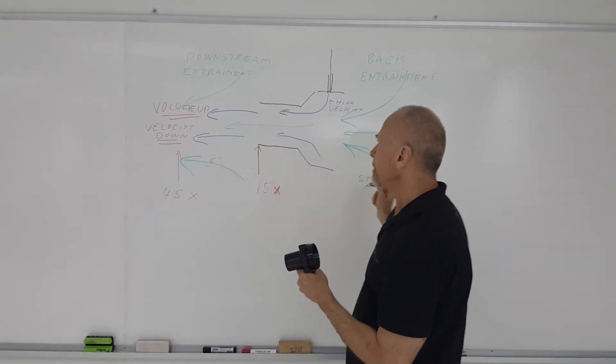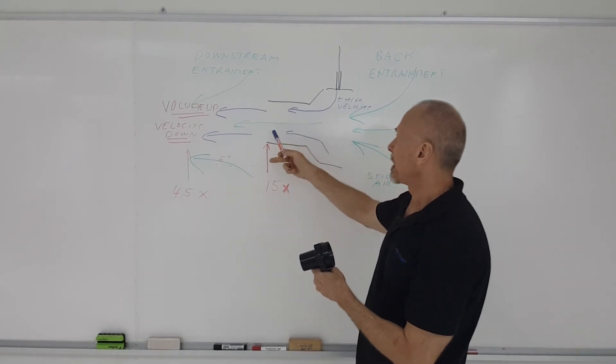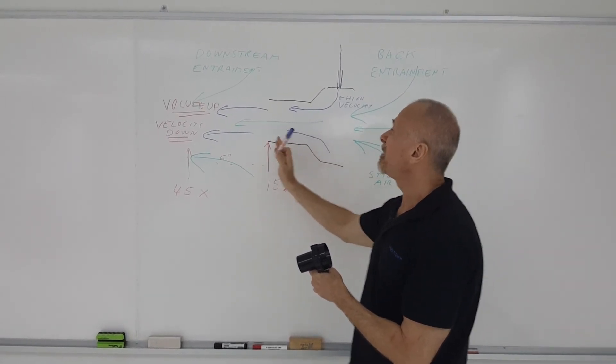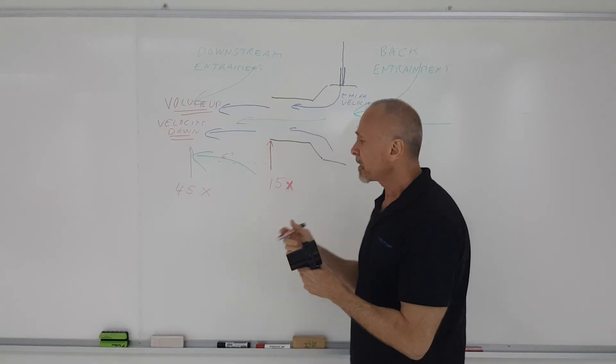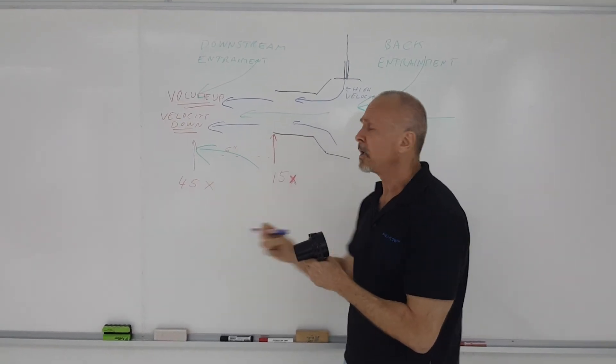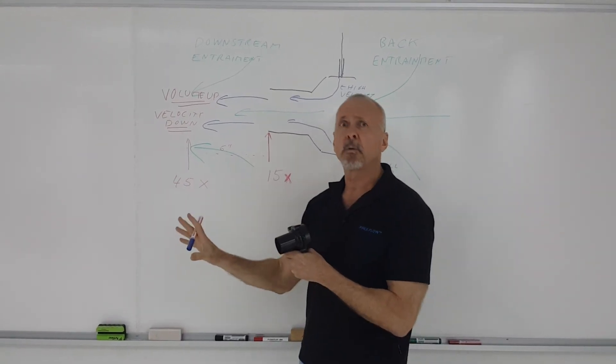So you can get maybe an amplifier that will amplify twenty-five or thirty times at the exit, but it's going to be very slow. If it's very slow, you're not going to have enough velocity to cool. You're not going to have enough velocity to blow off whatever you want to blow off.